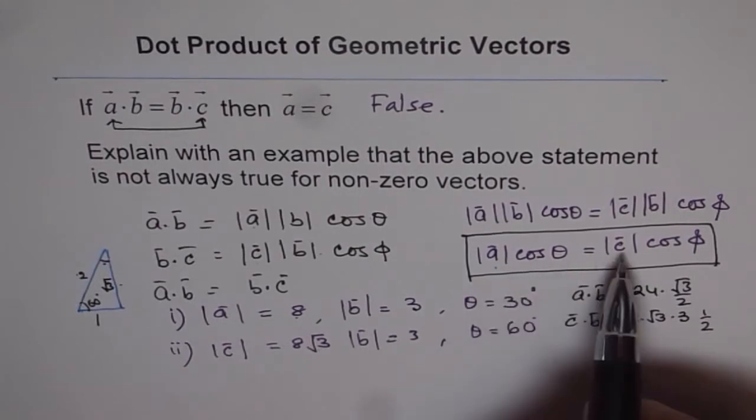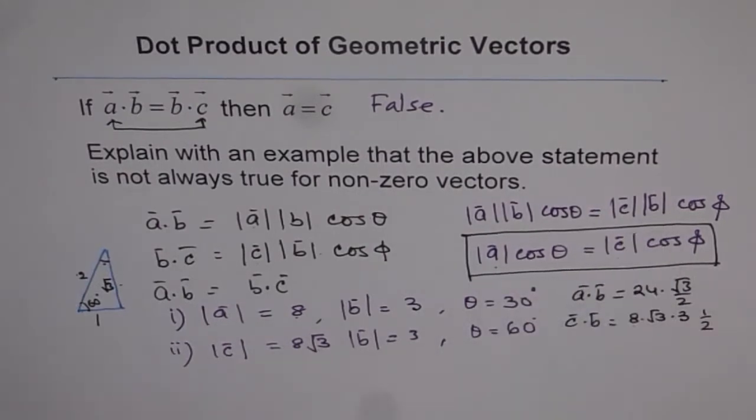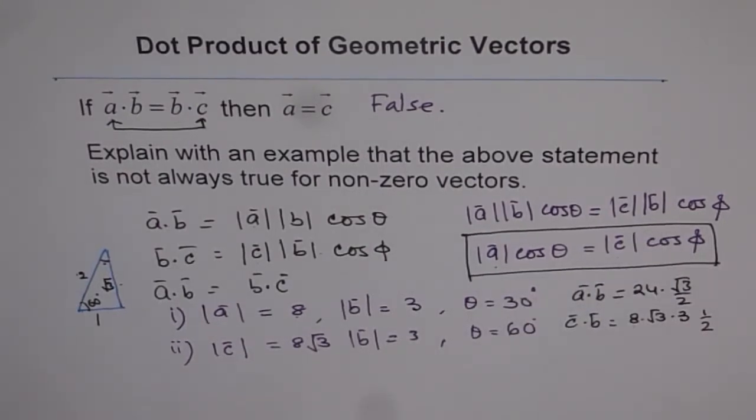magnitude of A cos theta should be equals to magnitude of C cos phi. The angle which A and C are making with B. That is kind of critical. So that is how you have to see it.